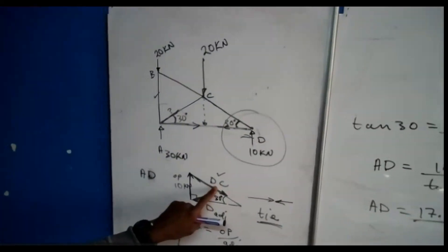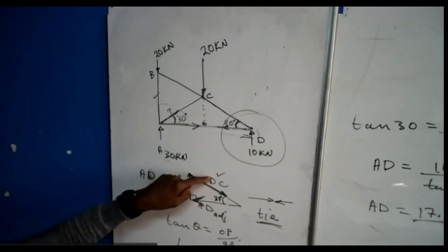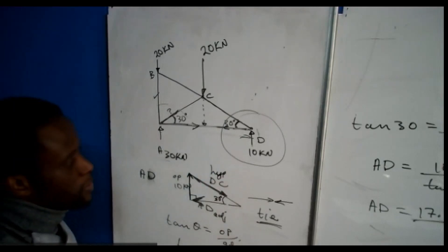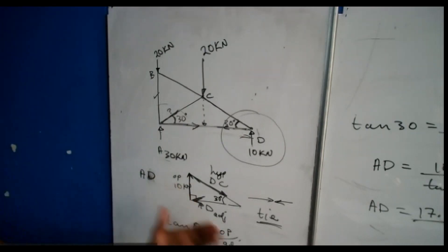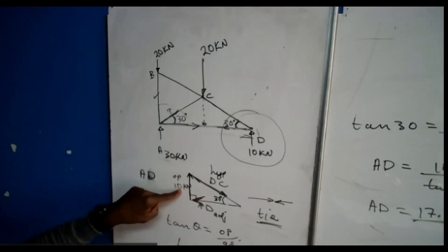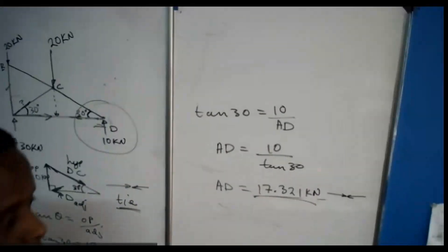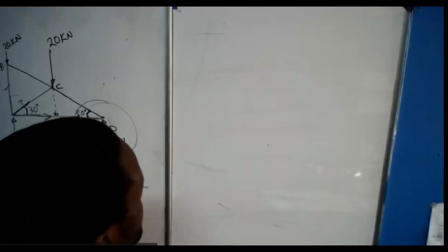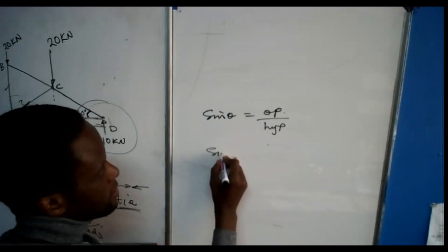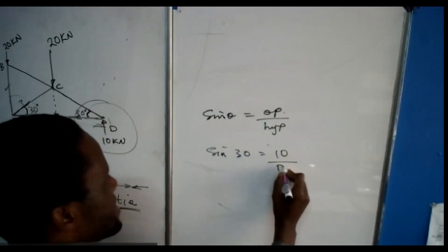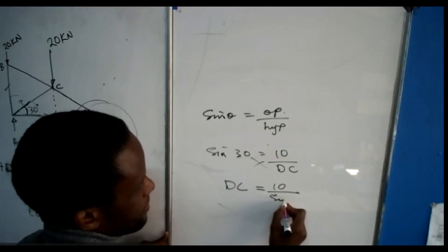Now go on to calculate DC. We still refer to the same triangle, but now we calculate for the hypotenuse. The trigonometric ratio to use is sin θ = opposite over hypotenuse. I will refer to the 10 kN (opposite) rather than the rounded 17.321 to keep accuracy. So sin 30° = 10 / DC, which gives DC = 10 / sin 30°.